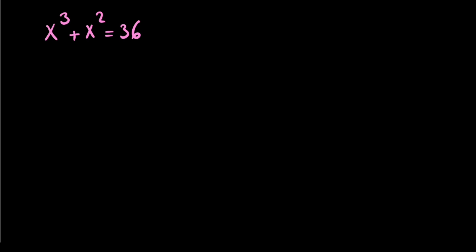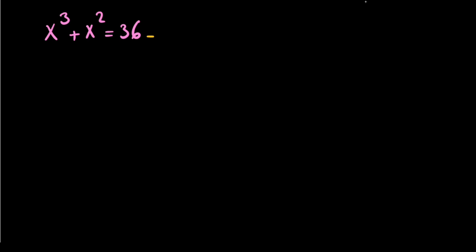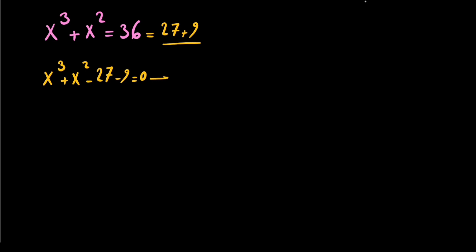If you look at 36, you can write it as 27 plus 9, which equals 36. So I want to move these two numbers to the left side. We can write x cubed plus x squared minus 27 minus 9 equals 0.